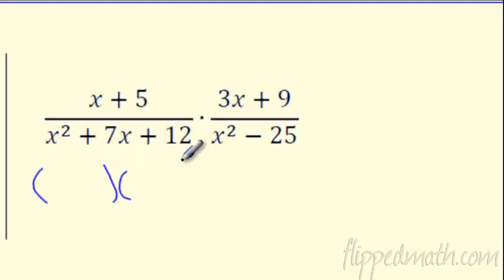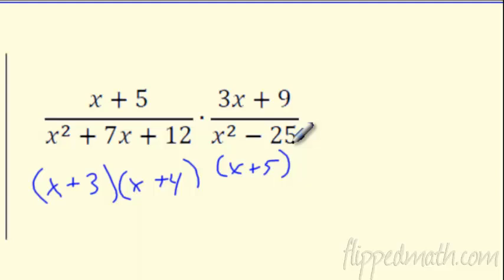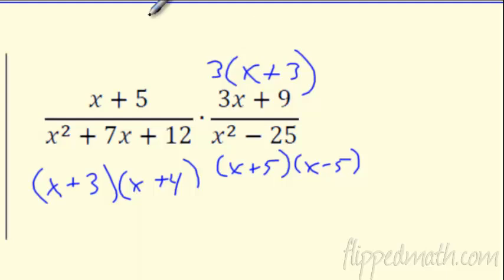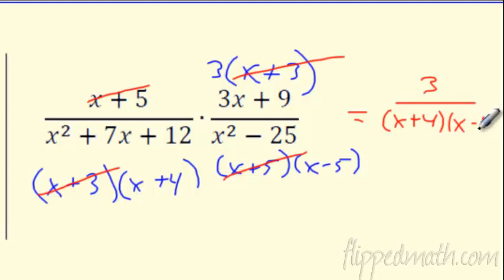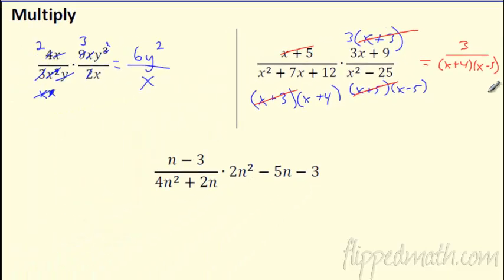I'm not going to worry about excluded values on these — that's just for simplifying. Moving on — now I've got a trickier one. I have to do a little factoring first. What adds to 7 and multiplies to 12? It should be x plus 3, x plus 4. We've got a difference of squares here, both perfect squares. Over here it looks like I can pull 3 out. So I've got all types of factoring going on. X plus 3 cancels x plus 3. X plus 5 cancels x plus 5. Everything canceled on top except the 3, so we've got 3 on top, and on bottom x plus 4 times x minus 5. I'm going to leave them in factored form.